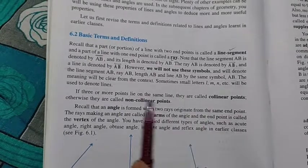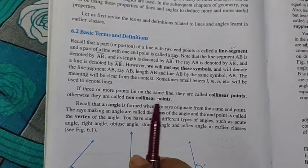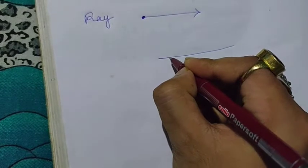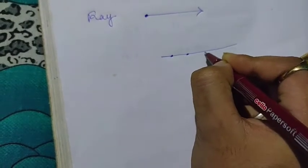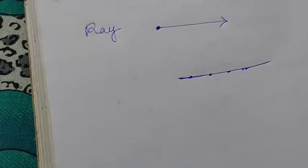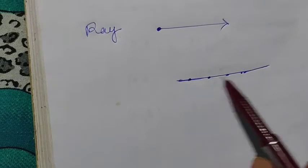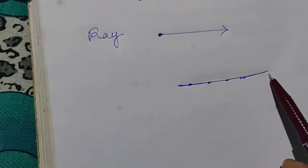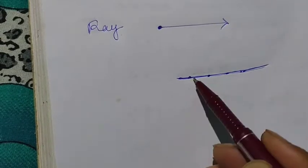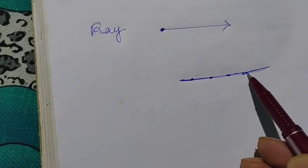What are collinear points and non-collinear points? If three or more points lie on the same line, they are called collinear points. We're drawing a line and assuming three or more points on that line. These points are called collinear points because we have three or more points on the same line. The line is not straight because I have drawn it freehand, but these points on it are collinear points.